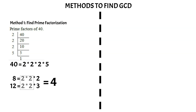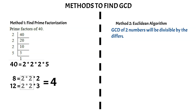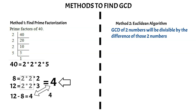The second method using which we can find the GCD between two numbers is known as the Euclidean algorithm. The Euclidean algorithm works with the simple principle that the GCD of any two numbers is divisible by the difference of those two numbers. In our last example with 8 and 12, the GCD was 4. When you subtract 12 by 8 the difference is 4, and if you divide this difference 4 with the GCD 4, it gives you 1 with no remainder. This is the basic principle on which the Euclidean algorithm works.